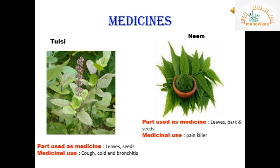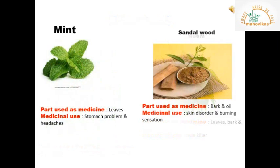Neem: the leaves, bark and seeds of the neem tree are used as medicine. They are used as a painkiller — that is, to reduce or stop pain. Mint: the leaves of the mint plant are used as medicine and are used to cure stomach problems and headaches.